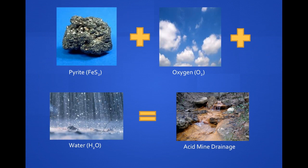Coal in southeastern Ohio is relatively high in sulfate and iron in the form of pyrite. As pyrite is exposed to oxygen and water during and after the mining process, sulfuric acid is generated. The decrease in pH suspends iron and other metals in solution. Eventually, this mine water makes its way to the surface and enters streams.